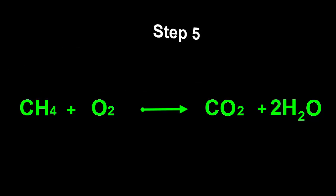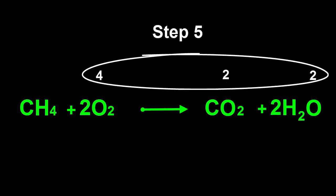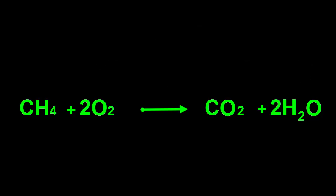Step 5. The last one is oxygen. On the left hand side, there are two atoms in the O2 molecule. On the right hand side, there are two inside the two H2O molecules, as well as two inside the CO2 molecule. That's a total of four on the right hand side. We can balance them by putting a two in front of the O2, making four on the left hand side as well. Oxygen is now balanced. All atom types are now balanced, and so is the equation.